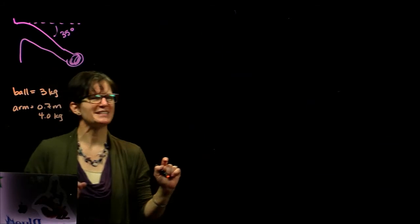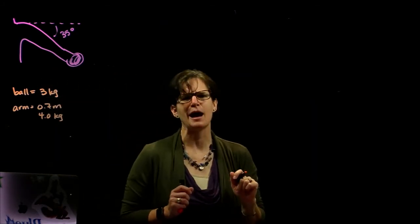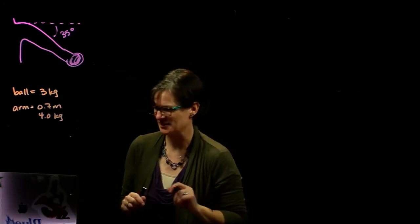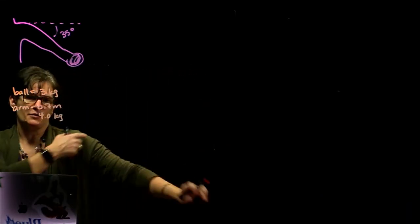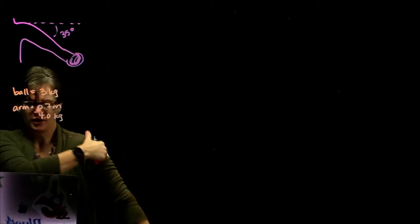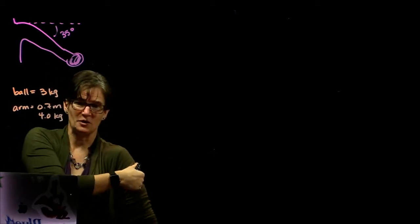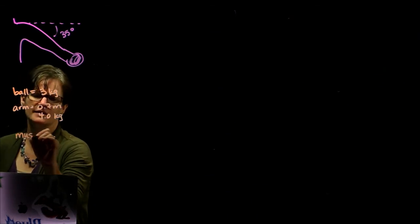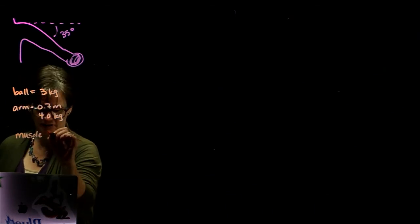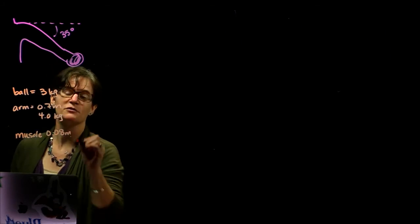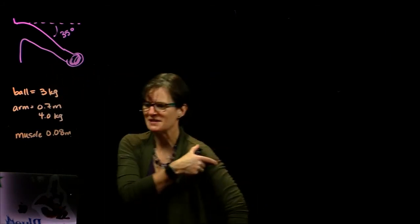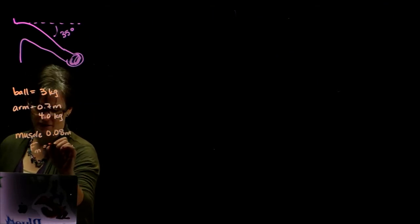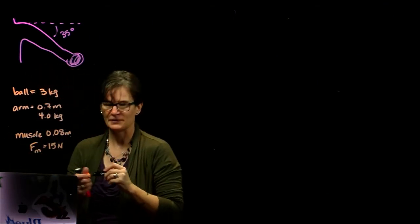We're going to assume it's evenly distributed for the sake of this problem. It's not, but instead of putting in a center of mass on that arm, we're just going to say it's evenly distributed for the sake of this problem. Now, we're using our deltoid muscle, which is up on our shoulder. It extends over the joint to help raise and lower our arm. The deltoid muscle is attached 0.08 meters from the shoulder, so 8 centimeters from the shoulder joint, and it's exerting a force of the muscle of 15 newtons at this point.